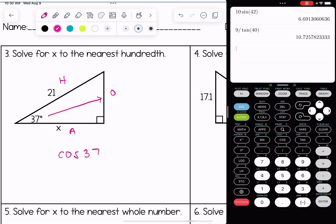Cross multiply. I have x equals 21 cosine 37. I'm going to put that in my calculator, looking to the nearest hundredth, and I have 16.77.